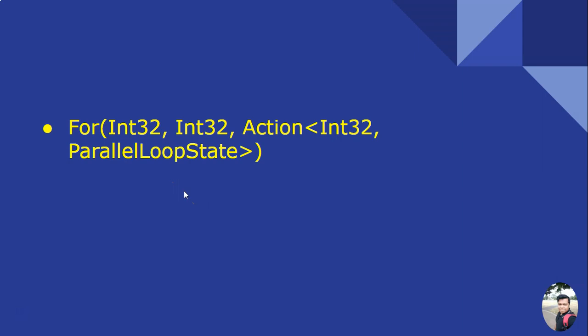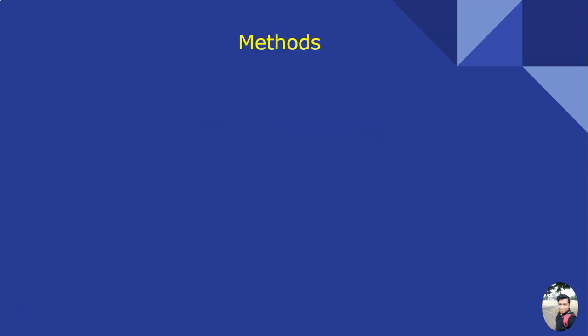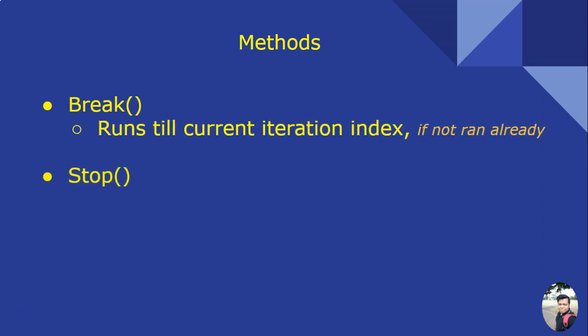The ParallelLoopState object has some methods and properties. Two main methods are Break and Stop. Once you call Break, all iterations with an index lower than the current iteration will run.